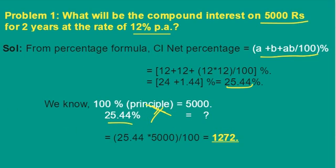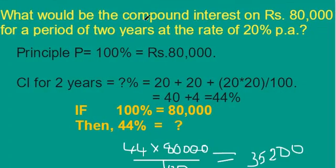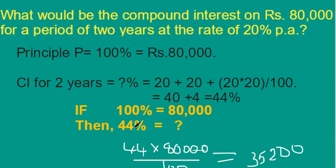Let us see one more problem. What would be the compound interest on Rs. 80,000 for a period of 2 years at the rate of 20% per annum? The principal amount is Rs. 80,000. By the net percentage method, A plus B plus AB by 100 at 20%, the net compound interest percentage for 2 years is 44%. By cross multiplication, if 100% equals 80,000 then 44% gives us 35,200 rupees as compound interest for 2 years.